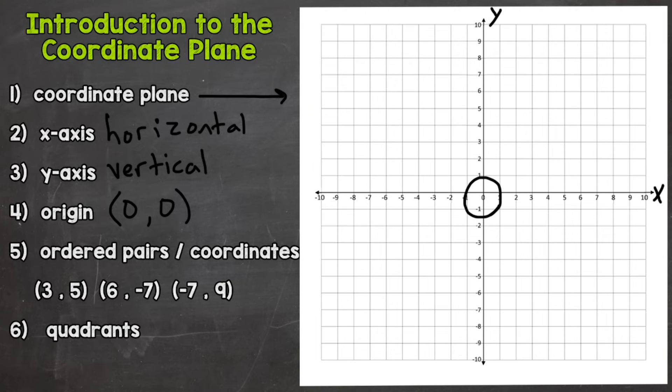We're going to go through a few examples here. For number five, we have ordered pairs/coordinates. The two numbers within the parentheses—for example, this 3 and 5—that's an ordered pair. The 3 is the x-coordinate and the 5 is the y-coordinate. The x always comes first. You always go side to side and then up or down.